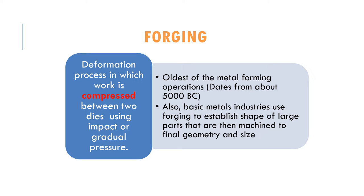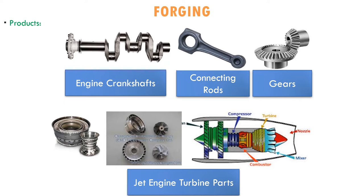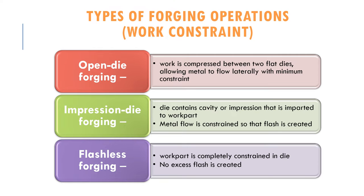Forging is also used in the basic metal industry to establish the shape of large parts, which are then machined into the final geometry and size. Some products produced via the forging process include engine crankshafts, connecting rods used in cars, gears, and even jet engine turbine parts.